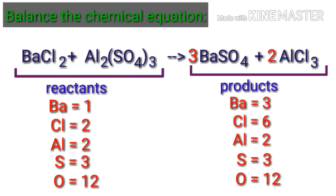But the barium atoms and chlorine atoms are not balanced on both sides. To do this, we can put a coefficient of 3 in front of BaCl₂.